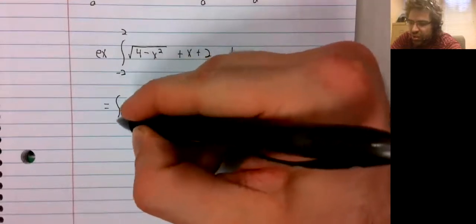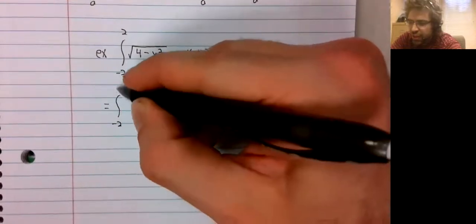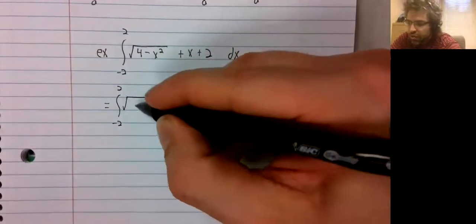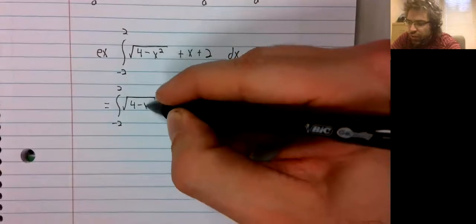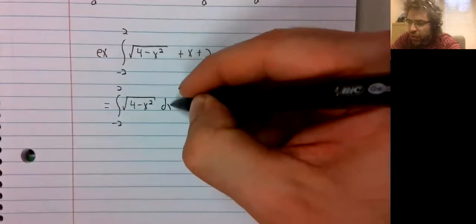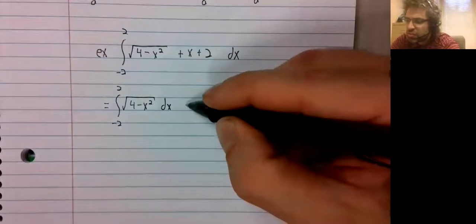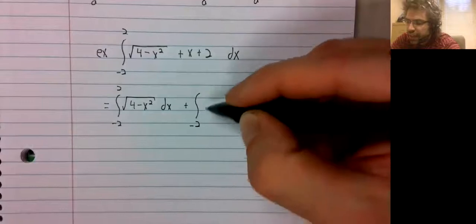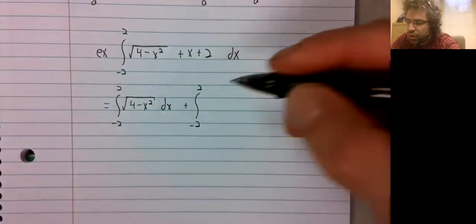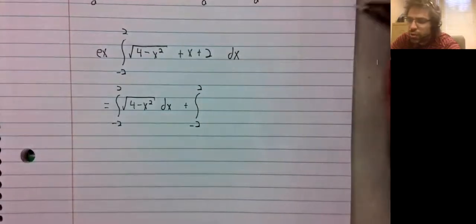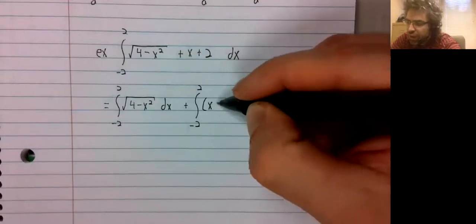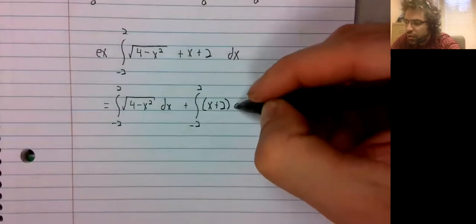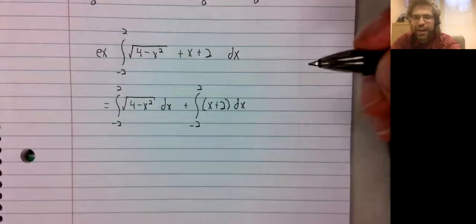But this is the integral from negative 2 to 2 of the square root of 4 minus x squared dx, plus the integral from negative 2 to 2 of x plus 2 dx.